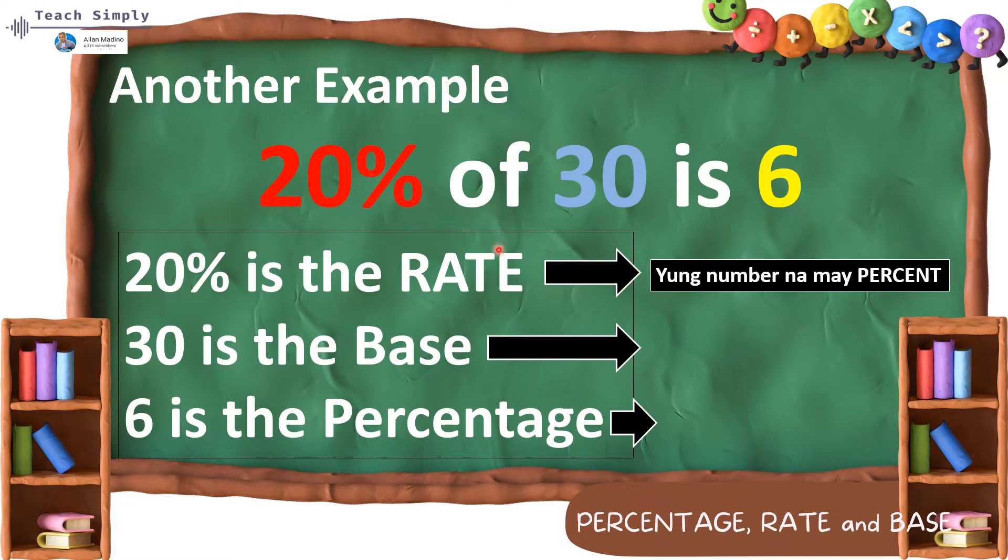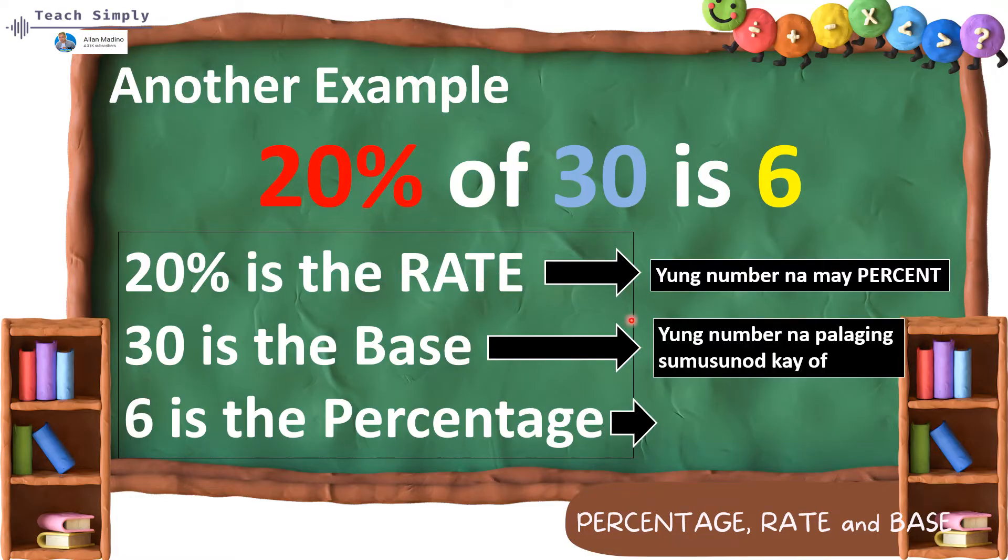Ngayon, yung rate ay yung number na may percent. Tandaan nyo yan lagi. Yung may percent, yun siya ang tatawagin nating rate. In this example, yung 20 yung may percent, therefore, 20% is our rate. Now, yung base ay yung number na palaging sumusunod kay off. So, off 30. So, nauna si off, yung sumunod sa kanya na number ay automatically is our base.